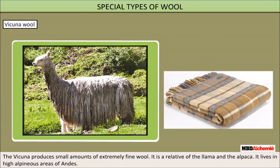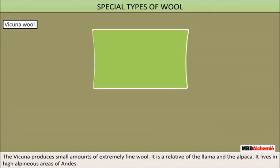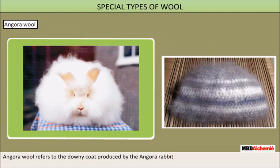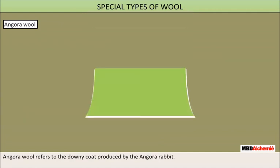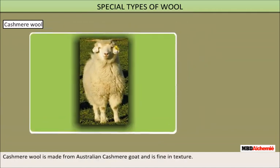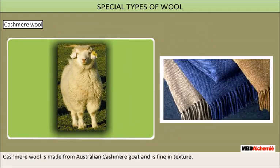The vicuna produces small amounts of extremely fine wool. It is a relative of the llama and the alpaca and lives in high alpine areas of the Andes. Angora wool refers to the downy coat produced by the angora rabbit. Cashmere wool is made from the Australian cashmere goat and is fine in texture.